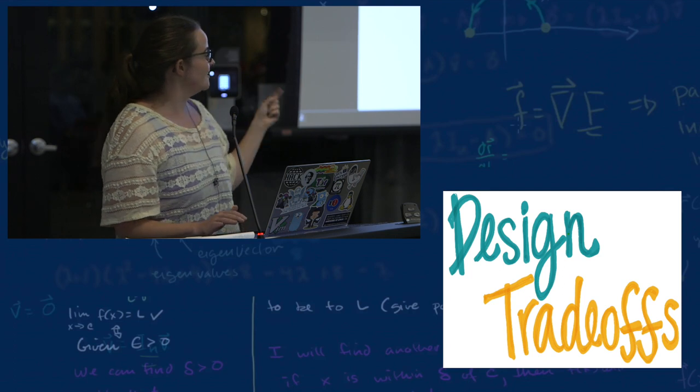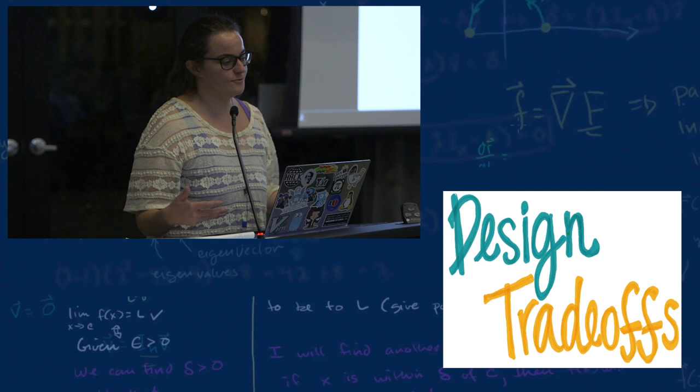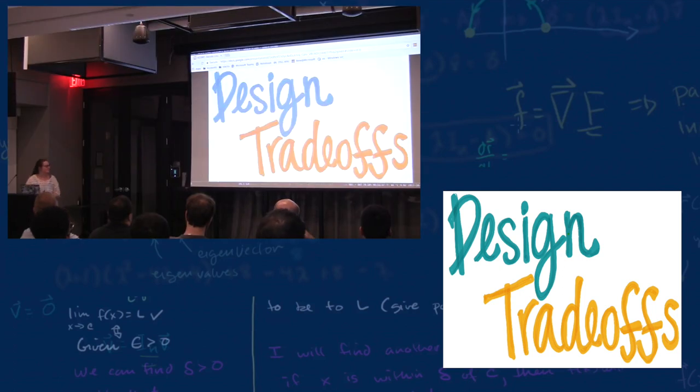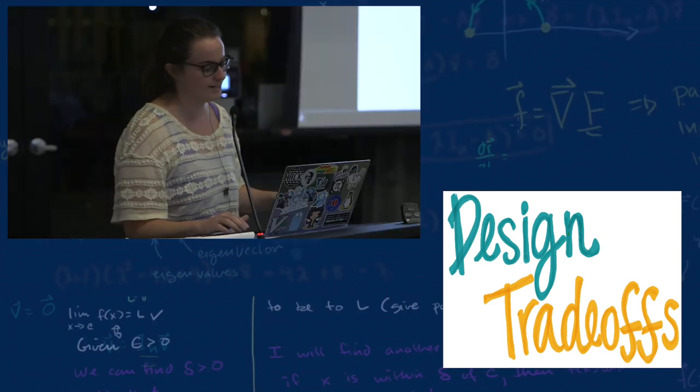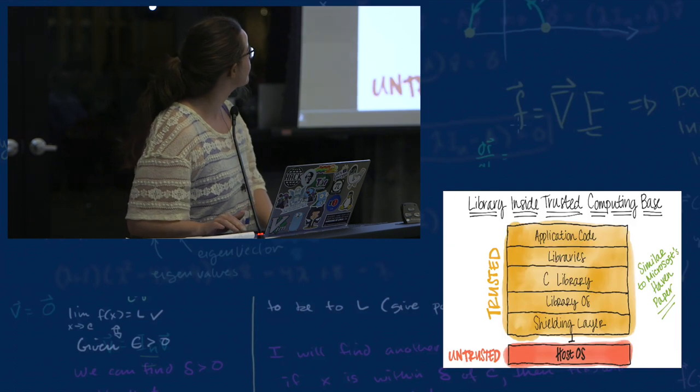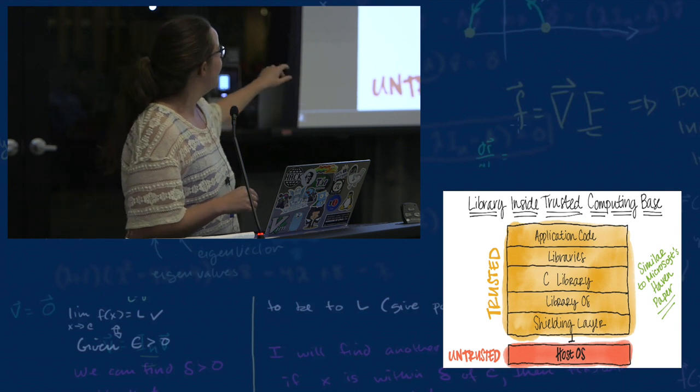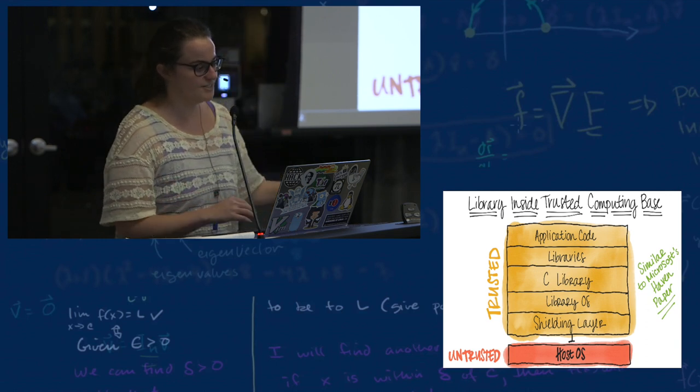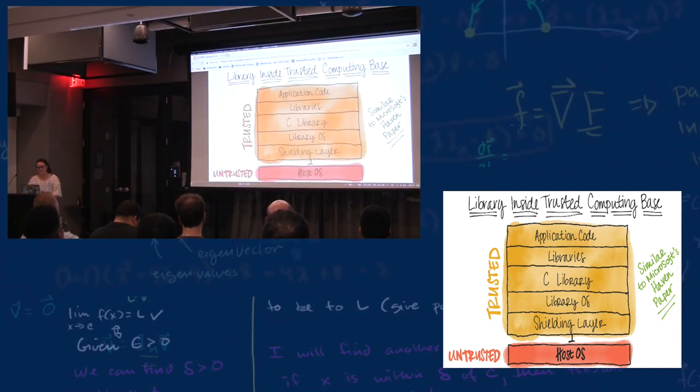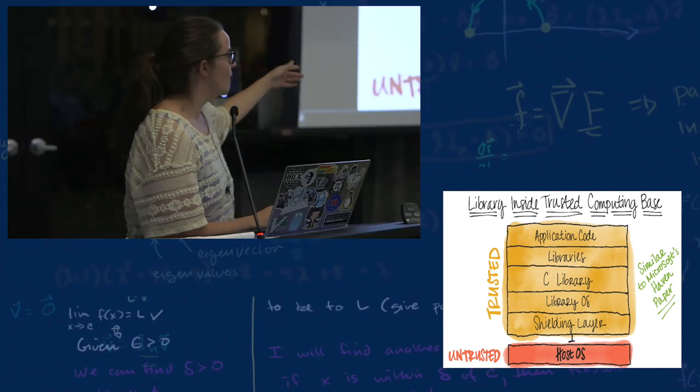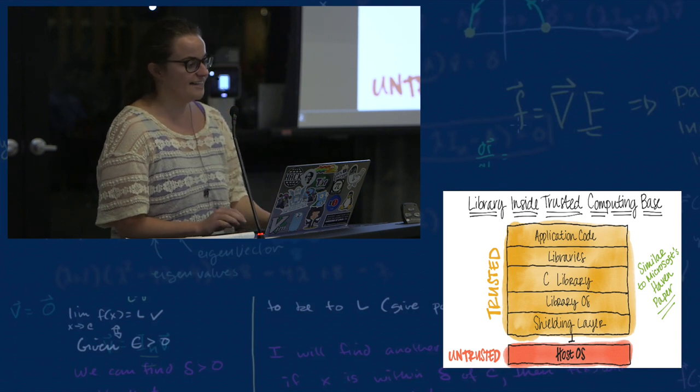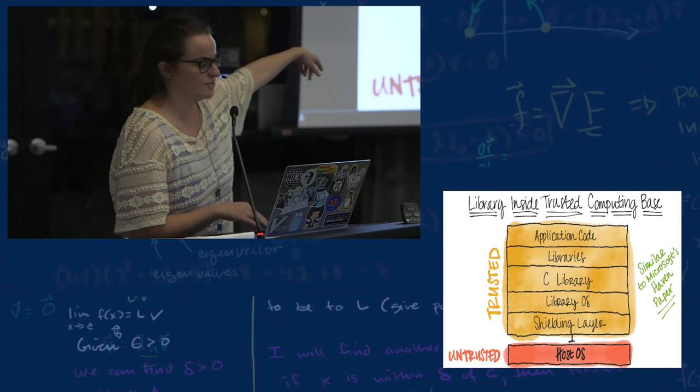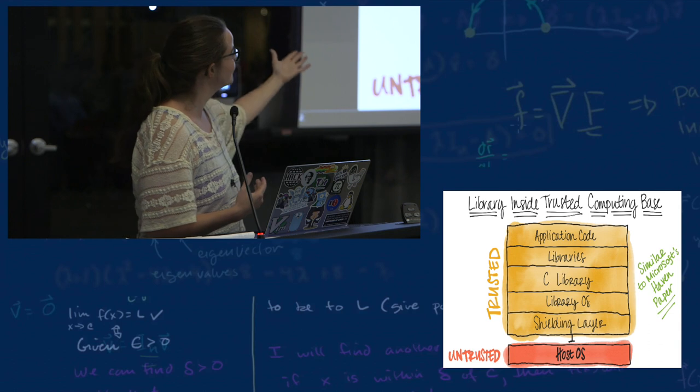They had a bunch of design trade-offs. What I really liked about this paper is that they used past knowledge and went through what they were thinking in these previous designs. The first one was a lot like the Haven paper for Microsoft, placing an entire Windows OS inside the Enclave, exposing a small external interface of syscalls. The library OS increased the size of the trusted computing base, which really sucks.